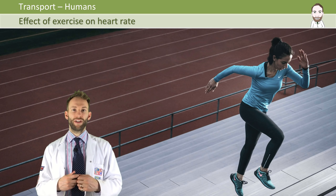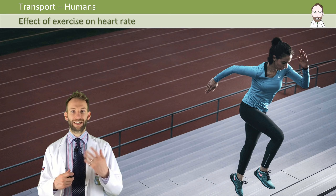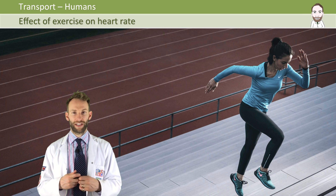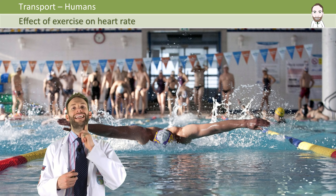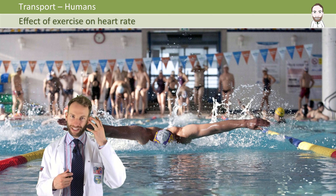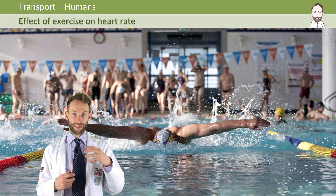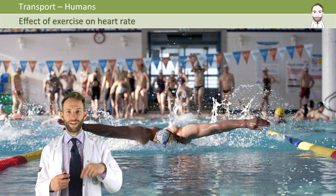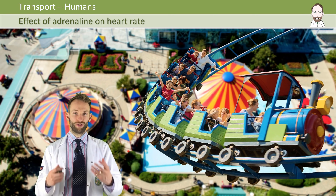When you exercise, your muscles need more oxygen for respiration, and you're also producing more carbon dioxide due to increased respiration. So when you exercise, heart rate increases in order to speed up the delivery of oxygen to the respiring cells and to remove the extra carbon dioxide. We have sensors in our aorta and in our carotid artery — the one that goes up in your neck — which detect carbon dioxide levels. If those levels go up, a message is sent to an area called the medulla in the brain, which then sends a message down an accelerator nerve to the heart to tell it to speed up.